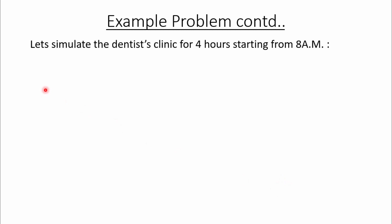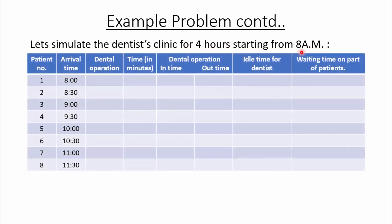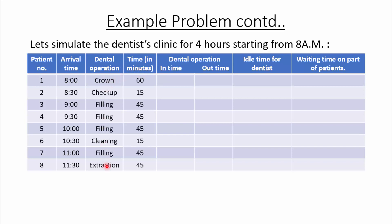Now let us simulate the dentist clinic for 4 hours starting from 8 a.m. The table has patient numbers 1 through 8, arrival times, type of dental operation, and service time. Since the inter-arrival time is fixed at 30 minutes, a patient arrives every 30 minutes starting from 8 a.m. Patient 1 has a crown operation taking 60 minutes, patient 2 has a checkup taking 15 minutes, patient 3 has a filling taking 45 minutes, and so on — these values come from the random number allocation table.